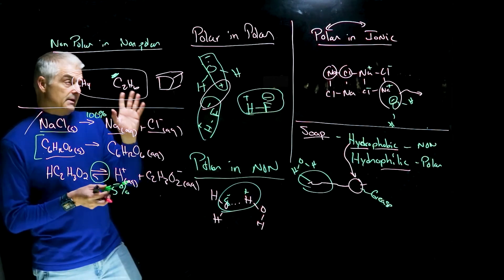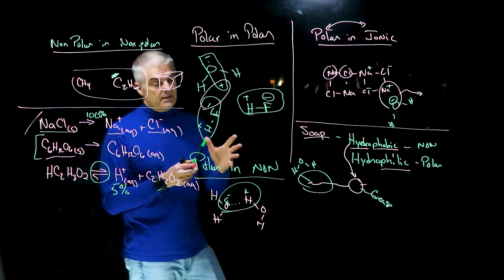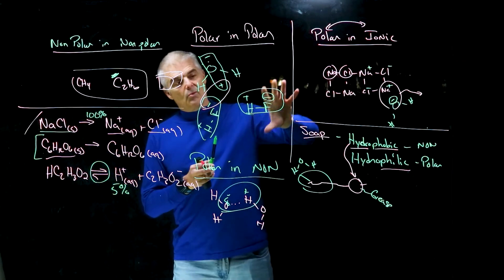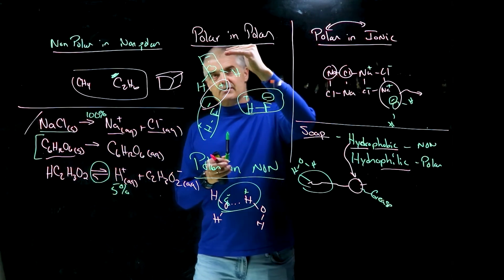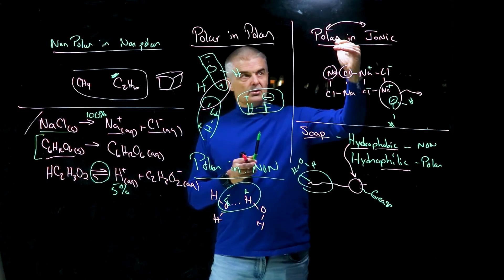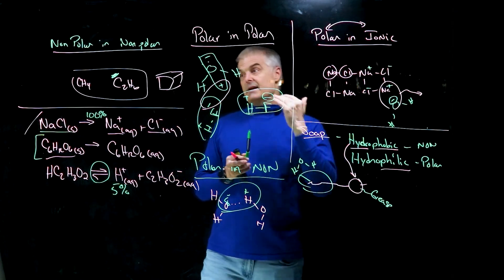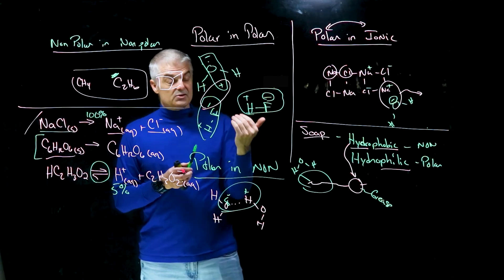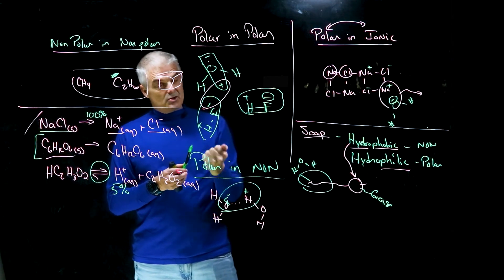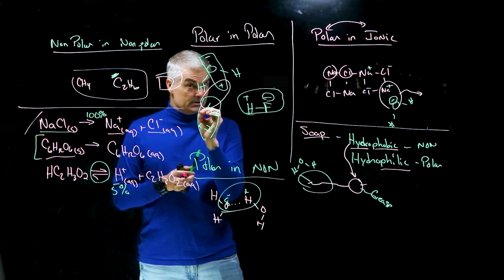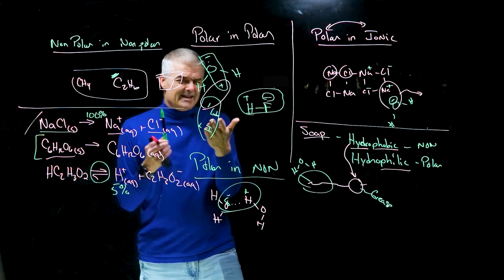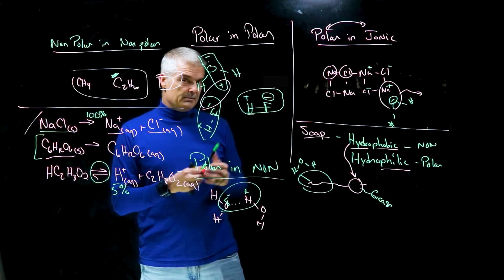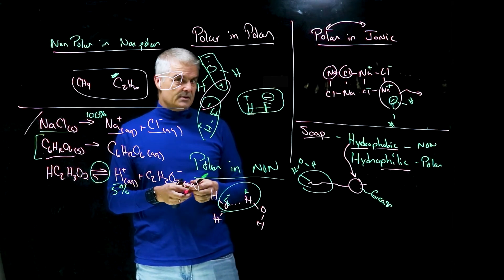So we're learning that polarity of molecules matters, and we can figure out why things dissolve by simply understanding polar and polar, polar and ionic, nonpolar and nonpolar — and then polar and nonpolar don't mix. The fancy term is like dissolves like, but it has only to do with polarity. It's not like red dissolves red — it's polar dissolves polar, nonpolar dissolves nonpolar.